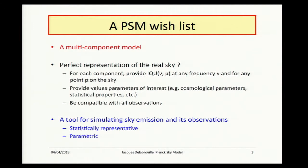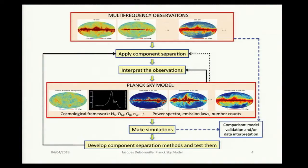We also want to provide values of parameters of interest — think cosmological parameters, statistical properties — not just maps of emission. And of course, we would like that to be as compatible as possible with all observations. What we also want is a tool for simulating this sky emission and its observation with Planck that's statistically representative and parametric, so we can change parameters, see what changes in the analysis, and what the impact is on our interpretation. Also, turn on and off several effects to see what their impact is on the science we get with Planck.